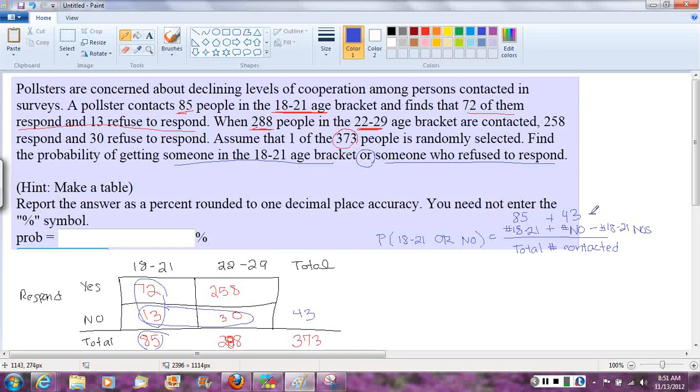And then we have to subtract off the number that got double counted. The number of 18 to 21 year olds who said no, that's that 13 there. You can see how it got double counted. So we're going to subtract off that 13.